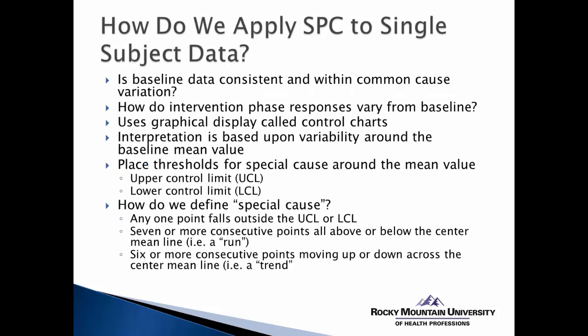So how do we apply statistical process control to single-subject data? We can apply this model to single-subject designs in two basic ways. First, we can look at the baseline data and determine if responses are within the limits of common cause variation — the expected variability. This allows us to assess the degree to which the data represents a reasonable baseline. Sometimes extreme variability within a baseline can obscure treatment effects. We may also find that one point exceeds the limits of common cause and can perhaps be accounted for by special circumstances, some sort of history effect, or something adverse that happened at that particular time point.